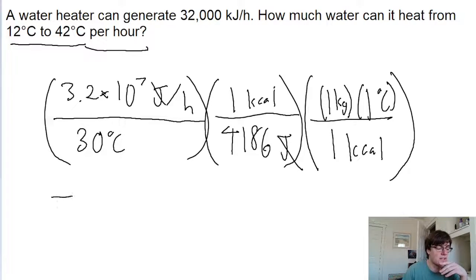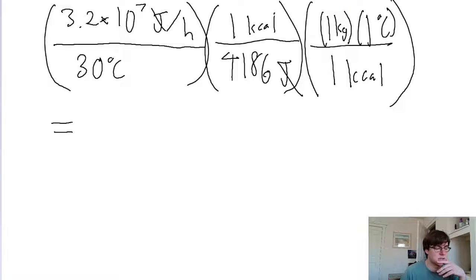So if we put all of this into a calculator, then we find an amount of mass per time as 254.8 kilograms per hour.